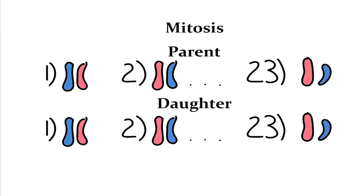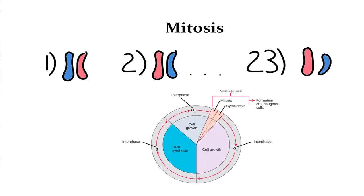We're going to first go over mitosis. The result of mitosis will be an identical cell to the parent. Let's look at the cell cycle, because mitosis is actually a very small part of it. The cell spends most of its time in something called interphase, which is broken up into three parts: G1, S, and G2.